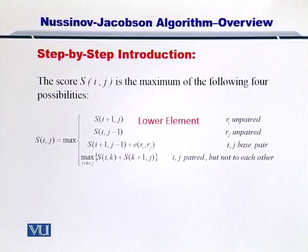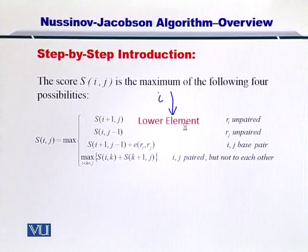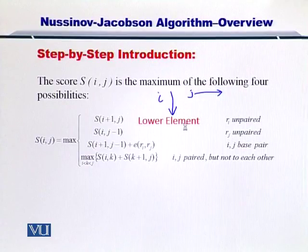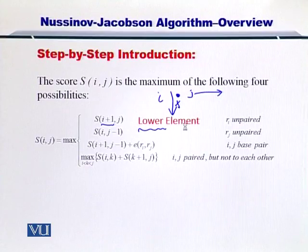S(i+1, j) is actually your lower element. So if you remember, you are looking at i in the vertical axis and j in the horizontal axis. So essentially, i plus one would mean if you are located at i, i plus one would be the lower element. So you have to look at the score in the element that is below your current position. You have to register its score and then consider the next one.